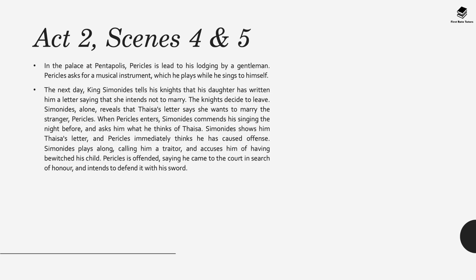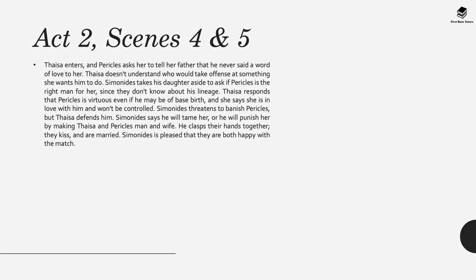Simonides alone reveals that Thaisa's letter actually says she wants to marry the stranger Pericles. When Pericles enters, Simonides commends his singing and asks what he thinks of Thaisa, then shows him the letter. Pericles immediately thinks he has caused offence. Although Simonides plays along, calling him a traitor and accusing him of having bewitched his child, Pericles defends his honour saying he came to court in search of honour and intends to defend it with his sword. Thaisa enters and says she cannot understand why anyone would take offence at her wishes. Simonides clasps their hands together, they kiss, and they are married — and Simonides is pleased.